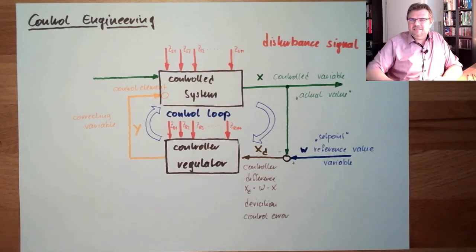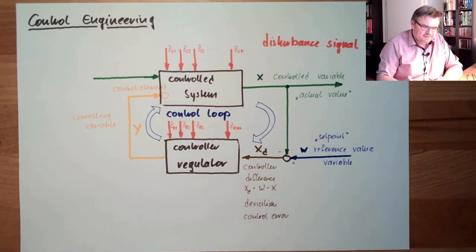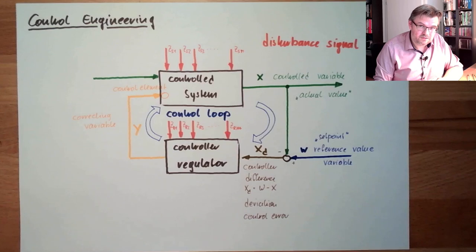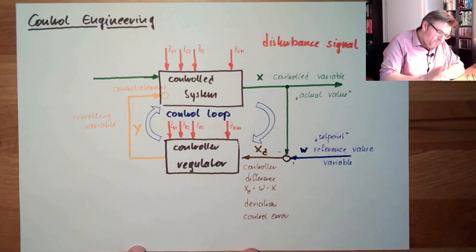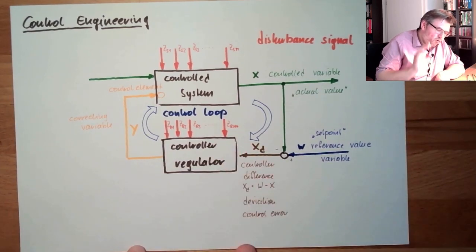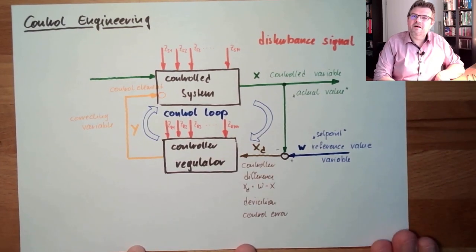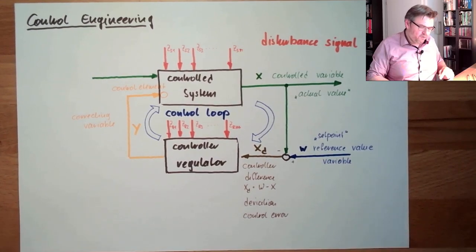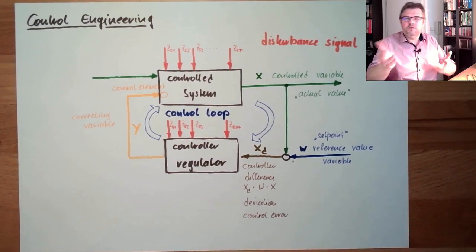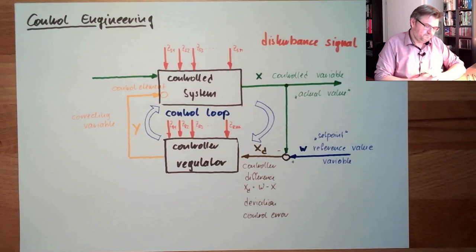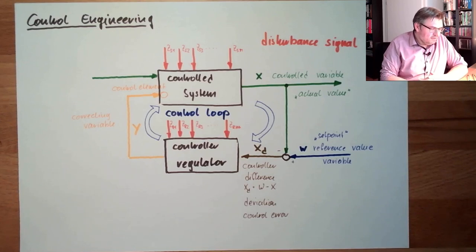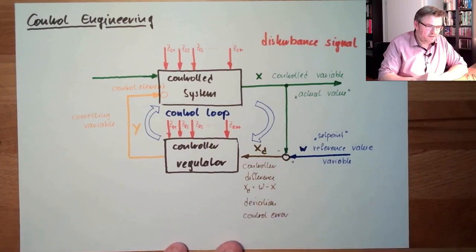If you're discussing whether this is a deviation or an error, it doesn't bring you any further to the solution of designing the controller. If you know what controlling is and you know what the deviation or control error is, the naming doesn't matter much. You should know that, strictly speaking, there is a difference.